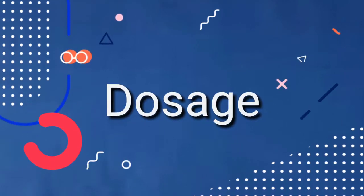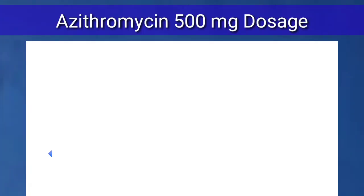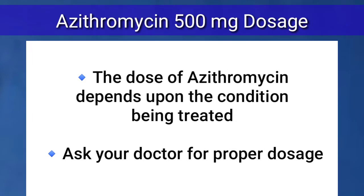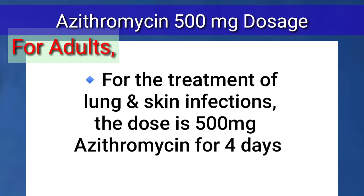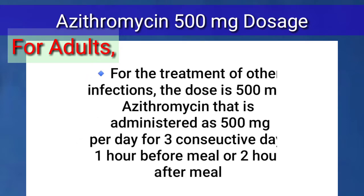Azithromycin can also be used to prevent Mycobacterium avium complex (MAC) infections in people with HIV infection. The dose of azithromycin depends upon the condition being treated — ask your doctor for proper guidance. For the treatment of lung and skin infections, the dose is 500 mg for four days. For other infections, the dose is 500 mg per day for three consecutive days, one hour before or two hours after a meal.